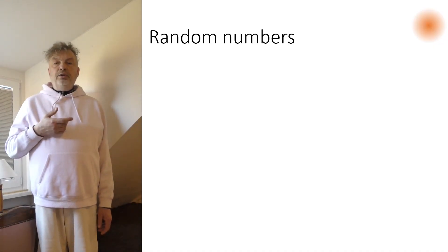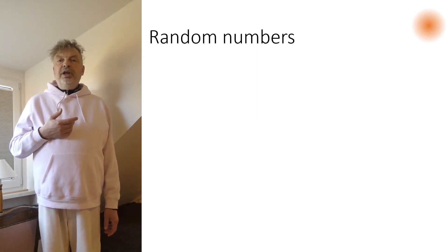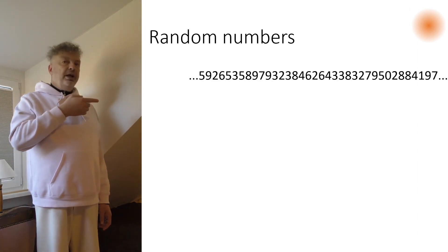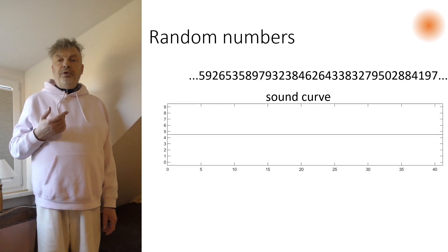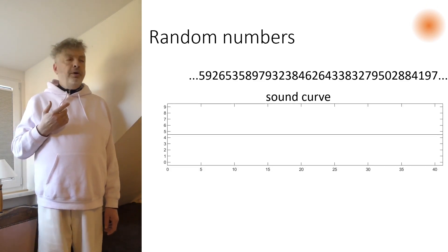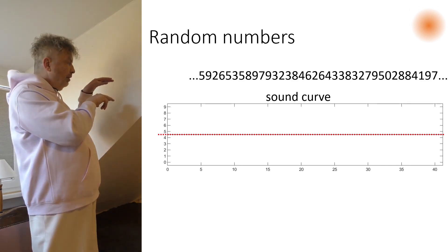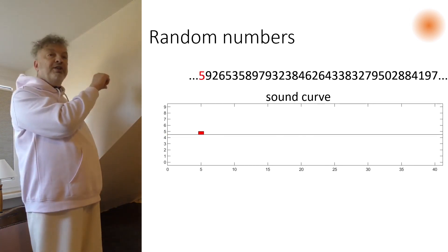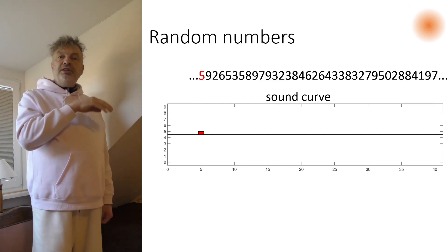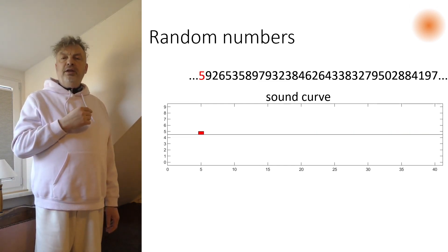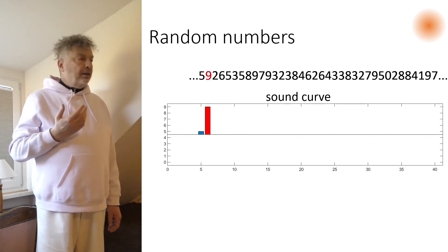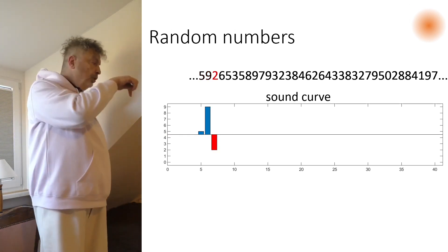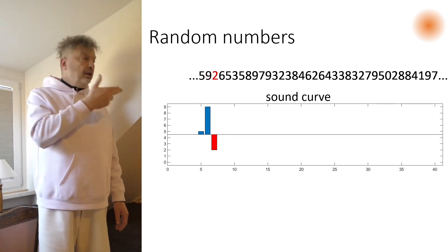Technically speaking, noise is a random signal. Just take a sequence of random numbers and convert these random numbers to a sound curve. The zero line of this curve is just between the digits 4 and 5. The first digit is a 5, resulting in the first rather small bar of the bar plot, just pointing a little bit above the zero line. The second digit is a 9, giving rise to a high bar, followed by a 2, resulting in a bar pointing downwards from the zero line, and so on.